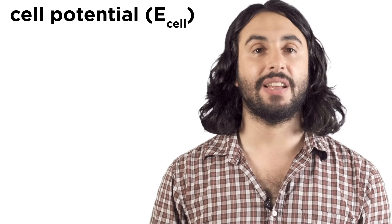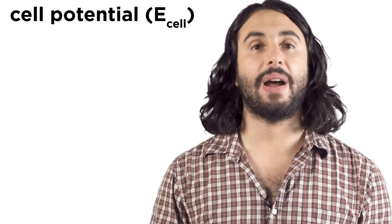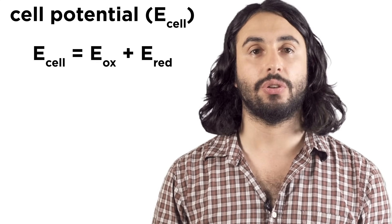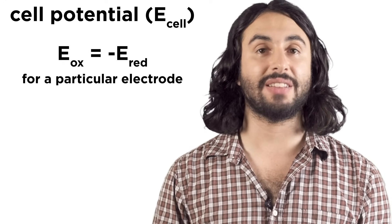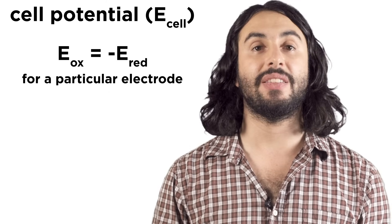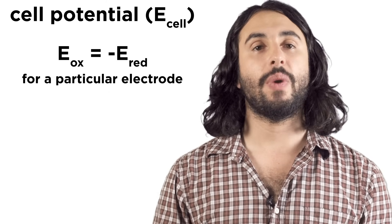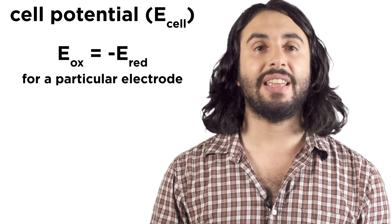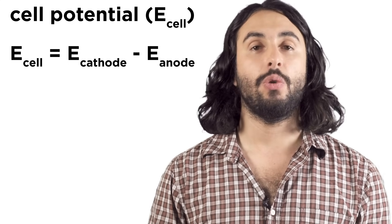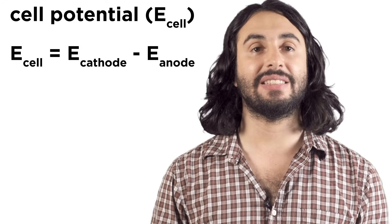For a voltaic cell, we measure the cell potential by looking at the oxidation potential and the reduction potential. But since oxidation and reduction are reverse processes, these will simply be the opposite of each other. So we arbitrarily decided to tabulate reduction potentials.